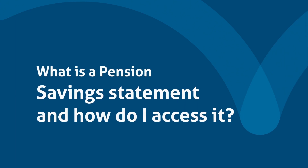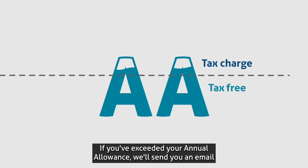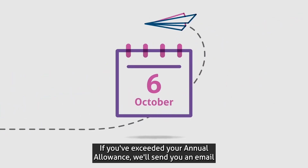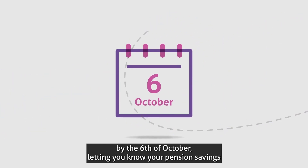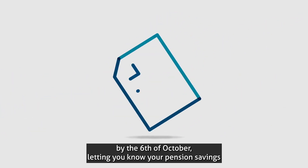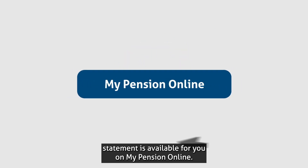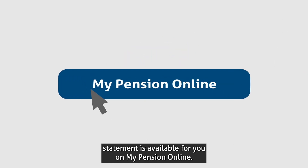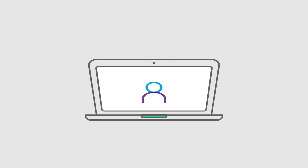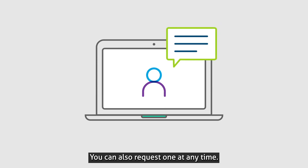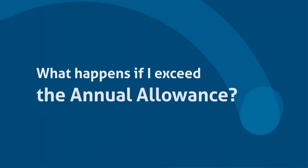What is a pension savings statement and how do I access it? If you've exceeded your annual allowance, we'll send you an email by the 6th of October letting you know your pension savings statement is available on My Pension Online. You can also request one at any time.